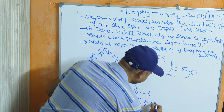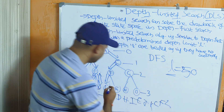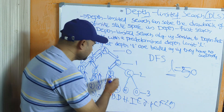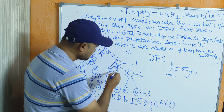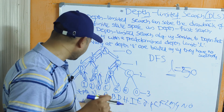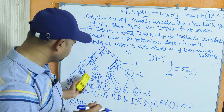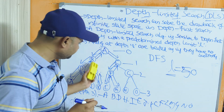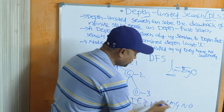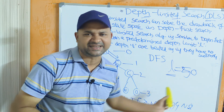Next, we explore the unexplored child C, then F, then L — dead end, backtrack. Explore M — dead end, backtrack. Then explore G, then N, then O. The full DFS traversal is: A, B, D, H, I, E, J, K, C, F, L, M, G, N, O. If the goal node is O, this is the path from start to goal using DFS.